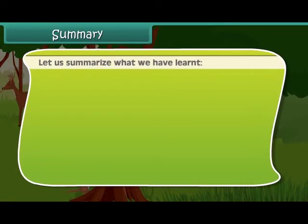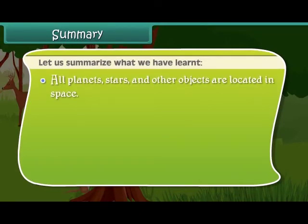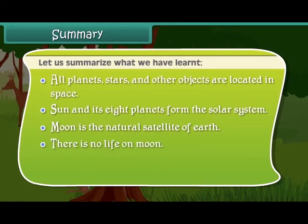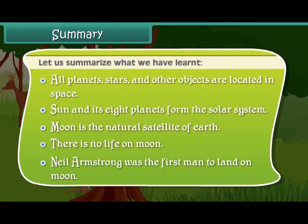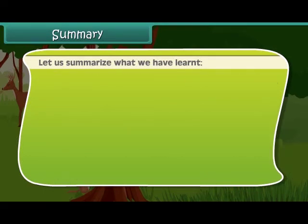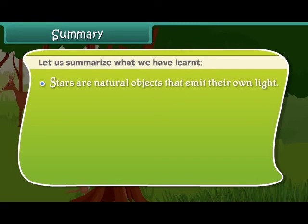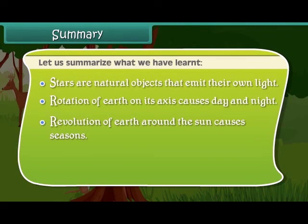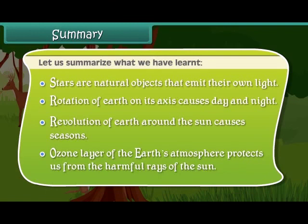Let us summarize what we have learnt. All planets, stars and other objects are located in space. The Sun and its eight planets form the solar system. Moon is the natural satellite of Earth. There is no life on Moon. Neil Armstrong was the first man to land on the Moon. Stars are natural objects that emit their own light. Rotation of Earth on its axis causes day and night. Revolution of Earth around the Sun causes seasons. The ozone layer of Earth's atmosphere protects us from the harmful rays of the Sun.